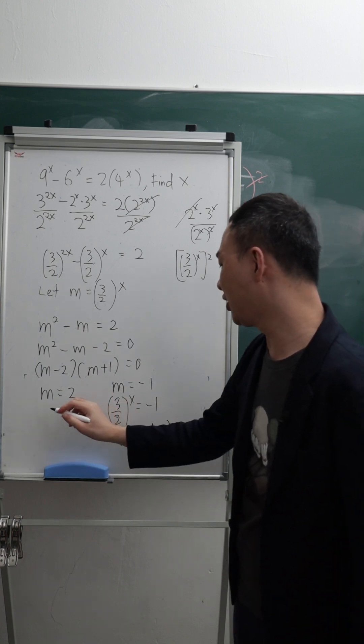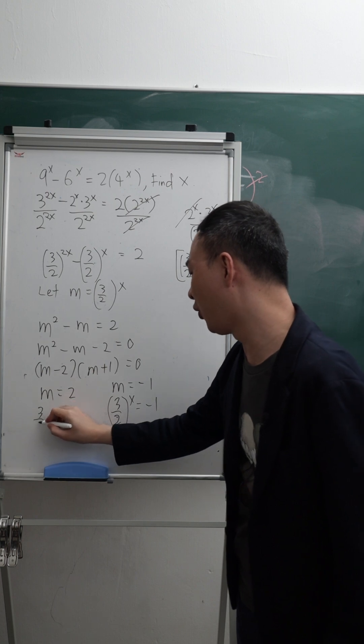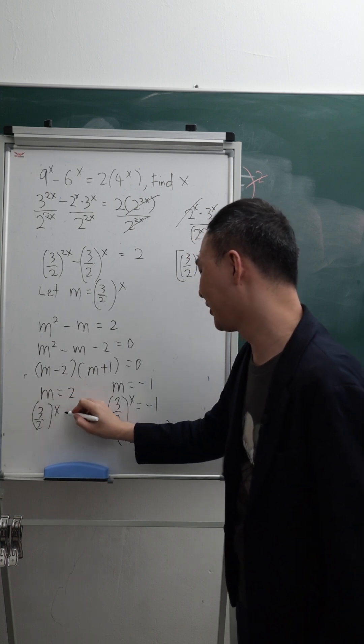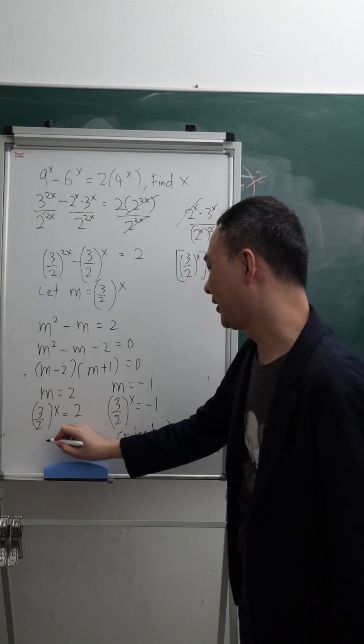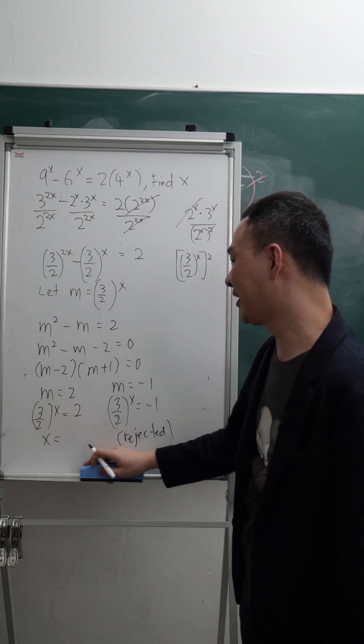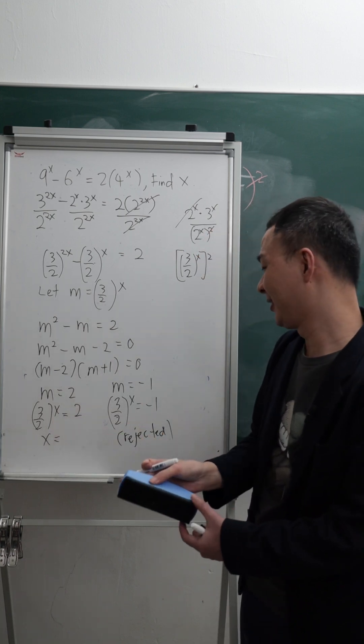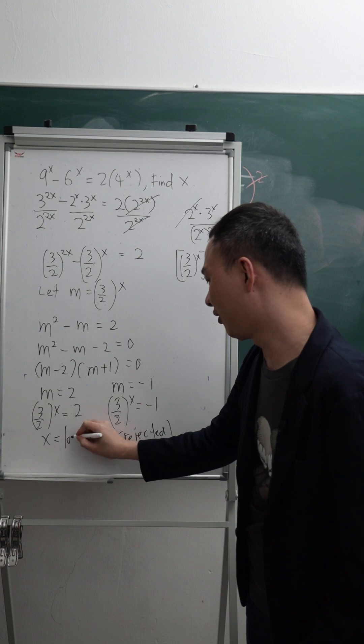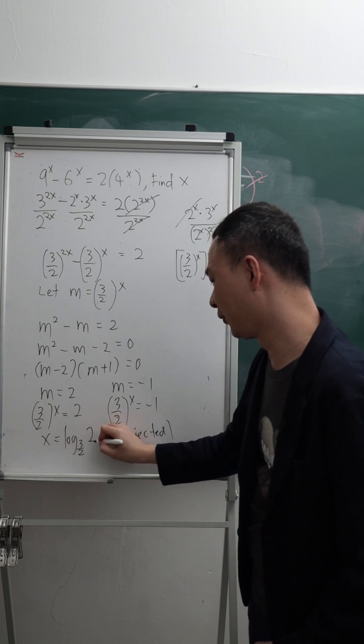This one we can solve it. So this one I should get something like 3 over 2 power of x equals to 2. Then x will equal to, we can just use a log to solve it. So this one you will get log base 3 over 2 and 2.